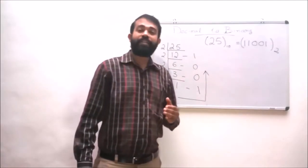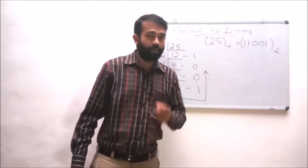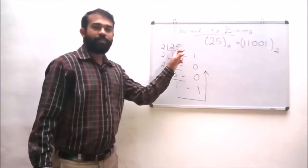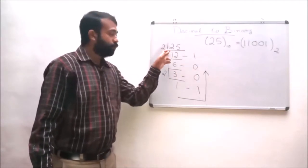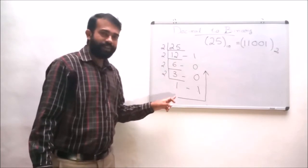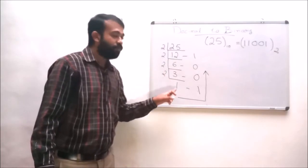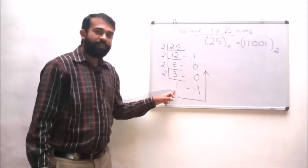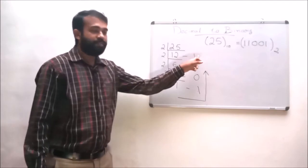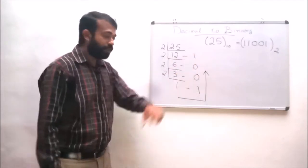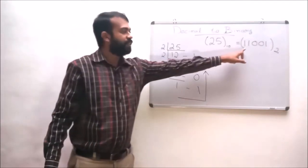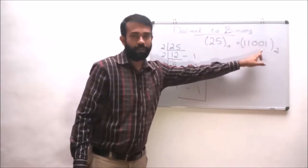While converting a decimal number into a binary number, we continuously divide by the base value 2 until the quotient becomes 1. The most significant bit is the last quotient 1 and the least significant bit is the first remainder 1. In this order, the final result is 1, 1, 0, 0, 1.